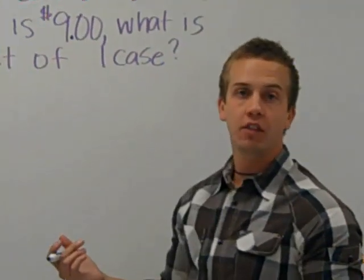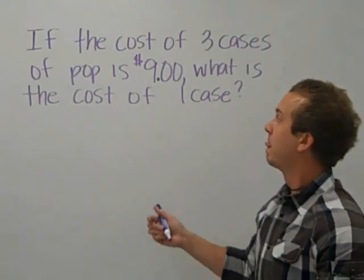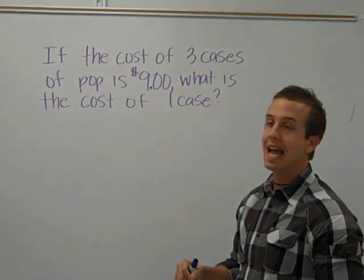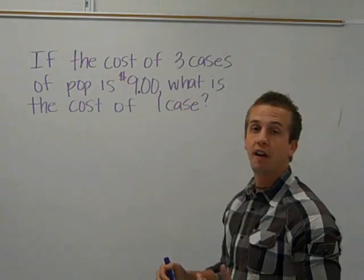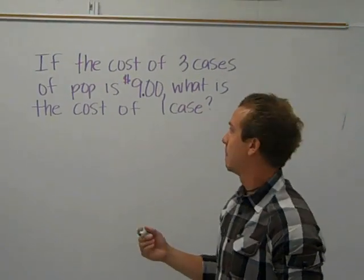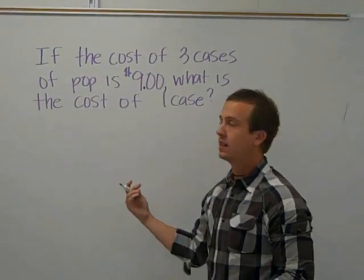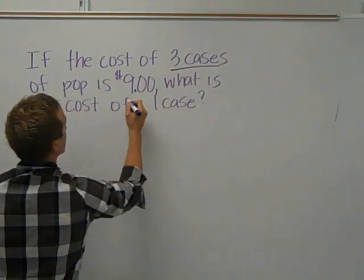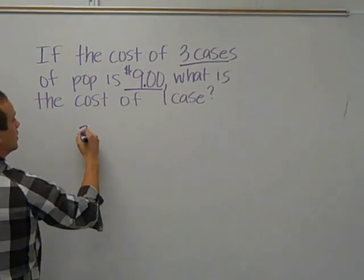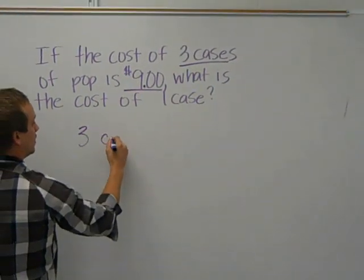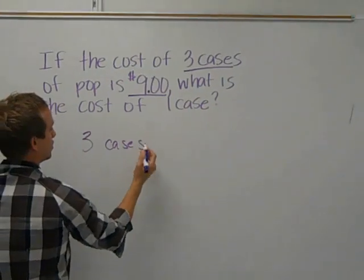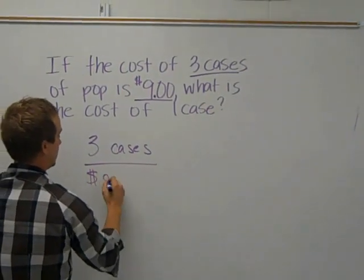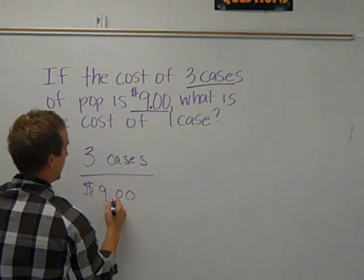Here is an example of solving for the unit rate. If the cost of three cases of pop is $9, what is the cost of one case? First thing you should always do is write down what you know. We know that three cases cost $9.